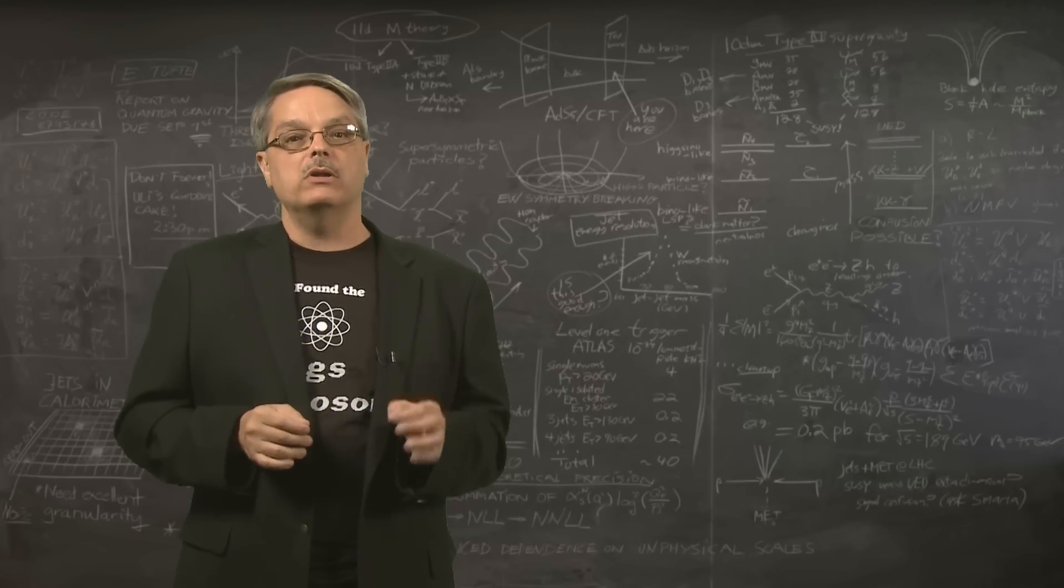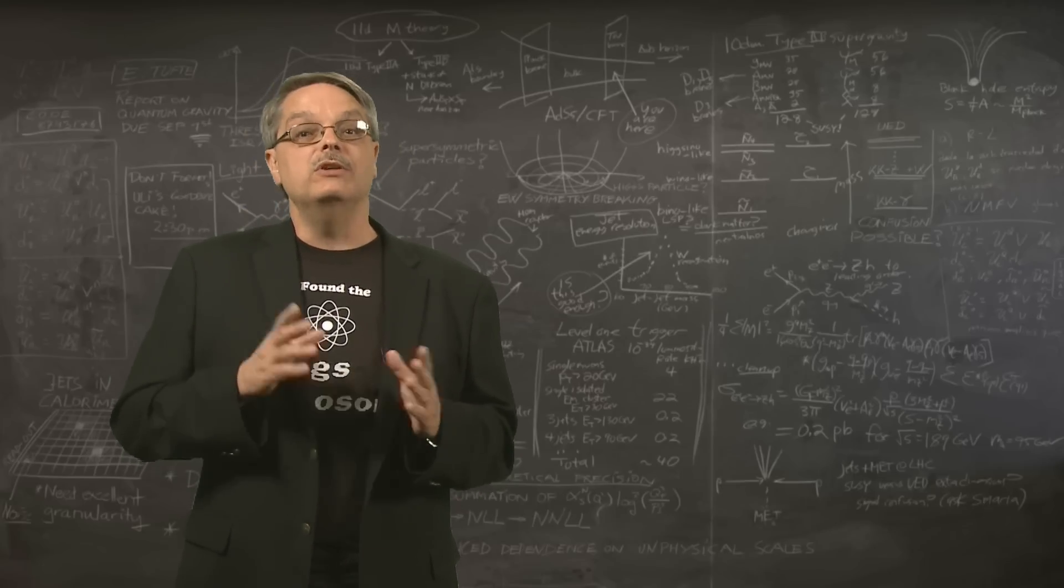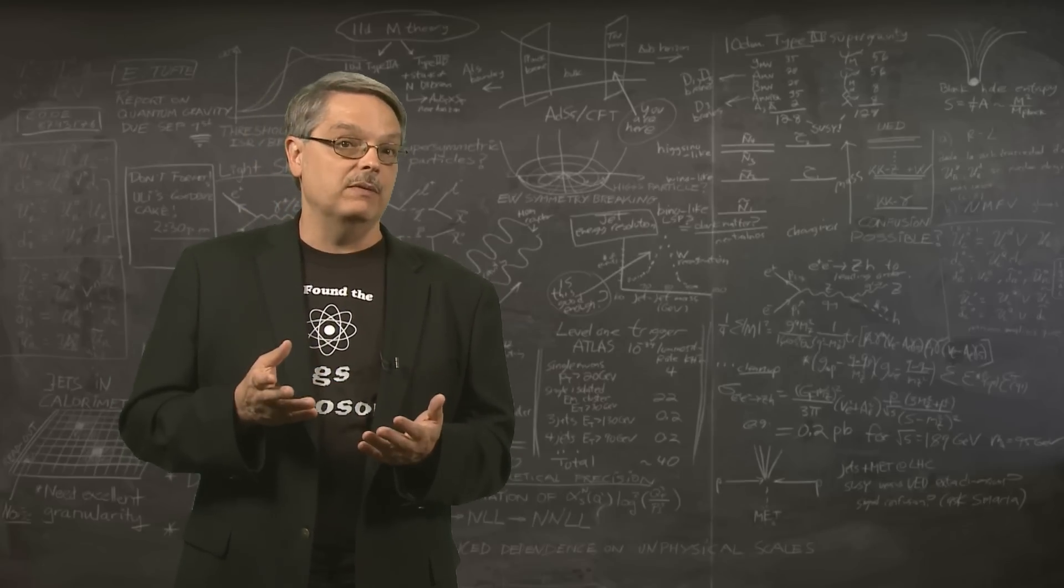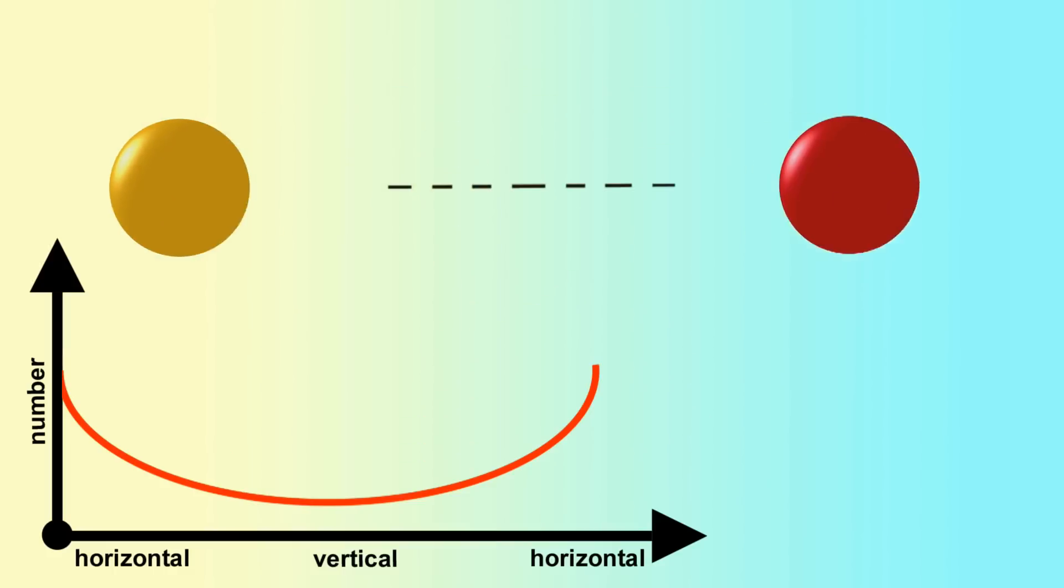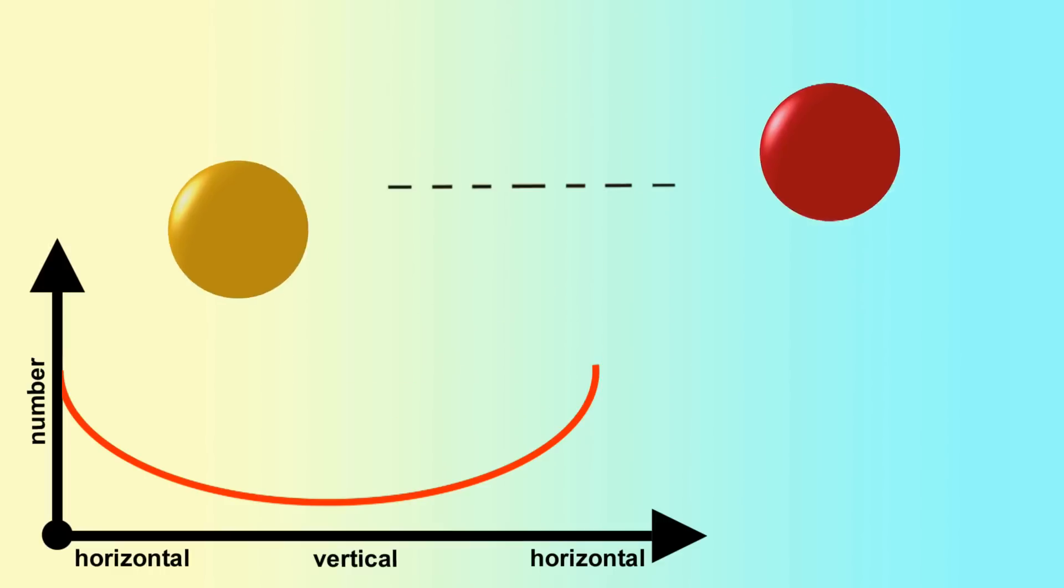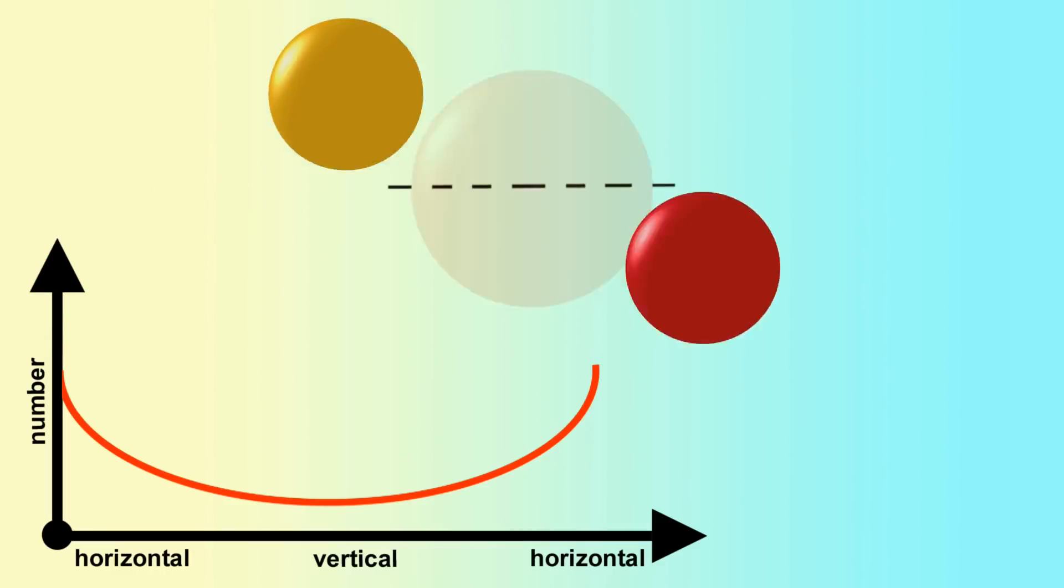In contrast, if a particle has a spin of two, then there is an axis the particle is spinning around. This picks a special direction. Because of this, and because the decay products themselves have a spin, it means that the decay products won't go in all directions with equal probability. There will be a specific pattern with some directions happening more often.